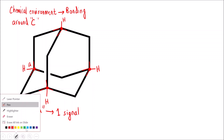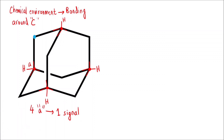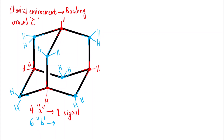Now, looking at the other carbons with a different color — this carbon is attached to 2 hydrogens and 2 carbons. Similarly, each of the remaining carbons is also attached to 2 hydrogens and 2 carbons. So in total there are 6 such carbons, and we can label them as group B atoms. These 6 B carbon atoms will give 1 signal.